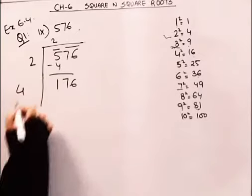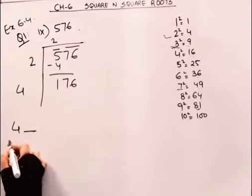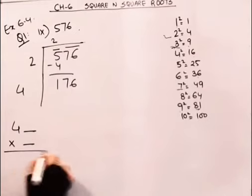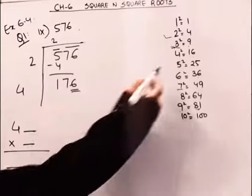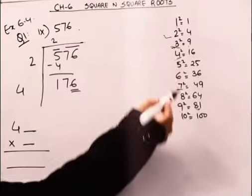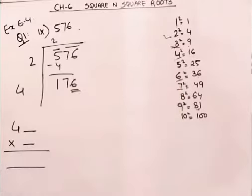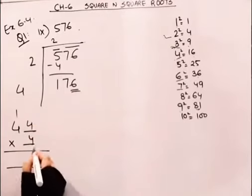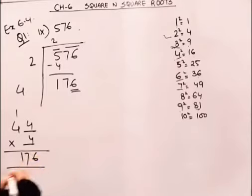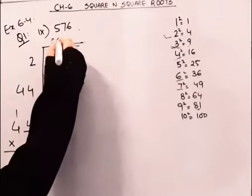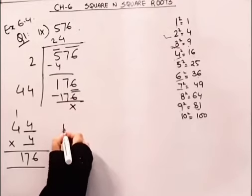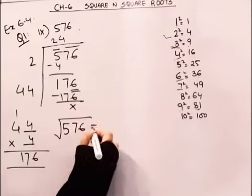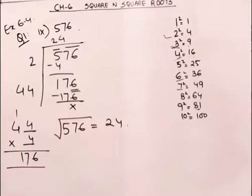Ab hum 4 ke saab, as a kaun sa number laga ke, ushi number se multiply karte hai ki unit place pe 6 mila hai. So that number either could be 4 - 4 fours are 16, or that number could be 6. To abab 4 laga ke dhe. 4 fours are 16, 17. That means yes, 4 is that number. Now the square root of 576 is 24.